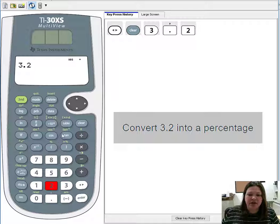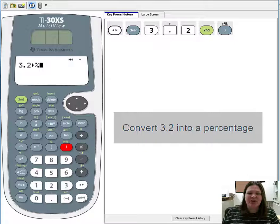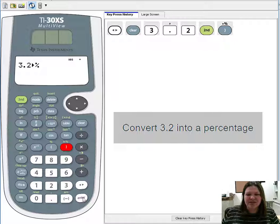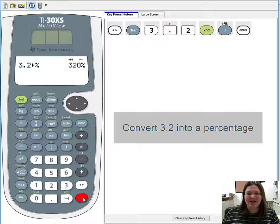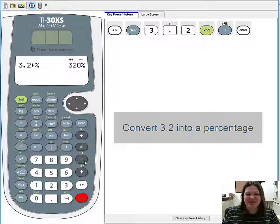And then I need the convert to percent button. Remember, don't use the plain old percent button. Use the convert to percent button with the arrow. So that's in green, so I need to press second, and then I can press that closed parentheses. It will convert 3.2 into a percent. And you'll see that's actually quite a large percent - 320%.